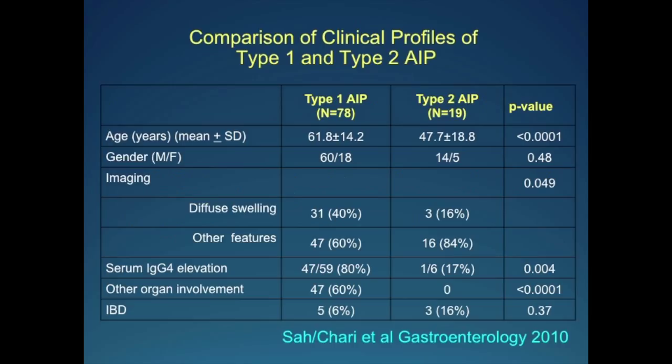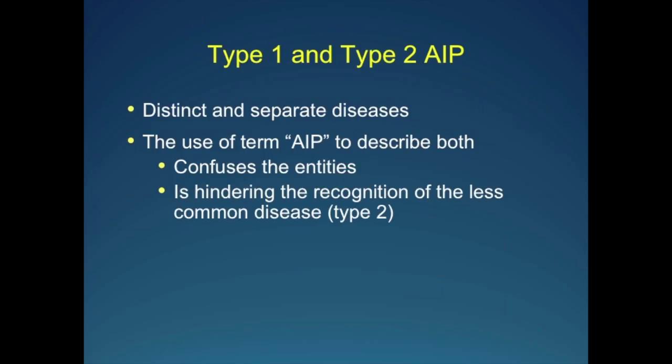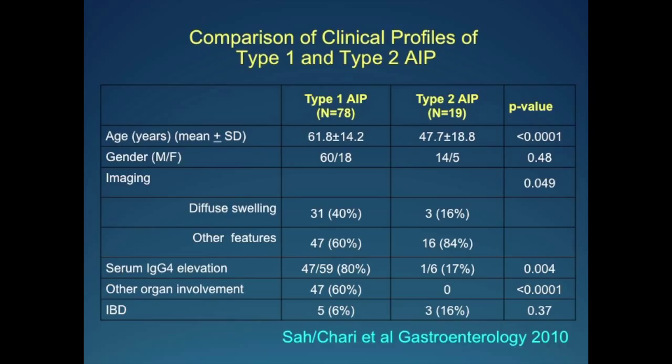It's dropped to around 15% in our series now. Comparing our initial experience with type 1 and type 2, type 2 patients are significantly younger than type 1 patients. Other organ involvement is not seen in type 2, and IBD is seen in both but more commonly in type 2. Finally, relapses are very uncommon in type 2, as opposed to being very common in type 1.